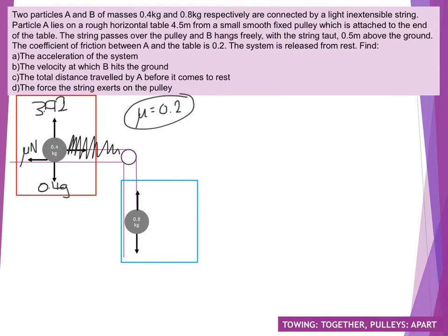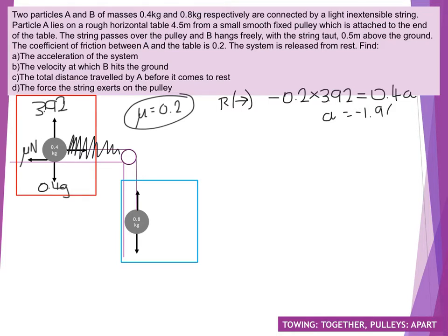So we've got to re-evaluate the forces acting on particle A. We can almost scribble out the tension section now, because once B has hit the ground there is no tension. Taking to the right as my positive direction, forces to the right are nothing. Going to the left I've got minus mu — knowing that mu is 0.2 — times by my value of N, 3.92. And I know that equals 0.4 times by the acceleration. So my new acceleration is going to be minus 1.96 metres per second squared.